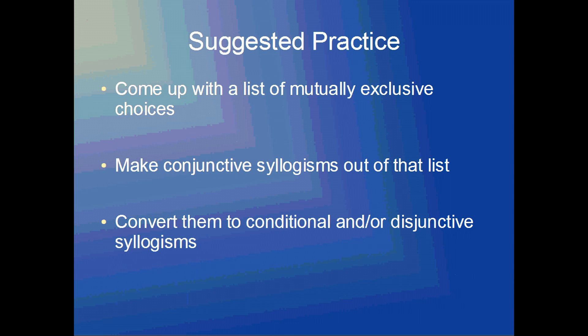Now if you want more practice to do on your own, just as I have suggested in the past, you can go to Yahoo, Google.com, Business Week, or Alternet, or any other site you like to look up articles. But there's something specific to look for: a list of either mutually exclusive actions, choices, or possibilities. When I say mutually exclusive, I mean they both cannot occur at the same time — only one or the other can occur. After you've made your list of mutually exclusive choices, you will make conjunctive syllogisms, and then convert those to both conditional and disjunctive syllogisms.